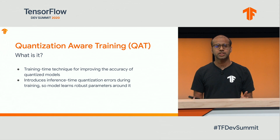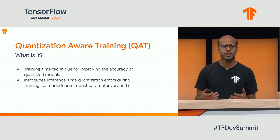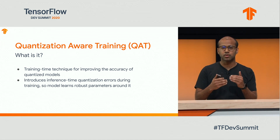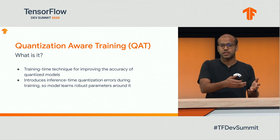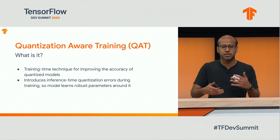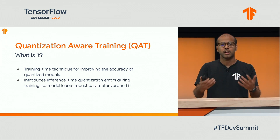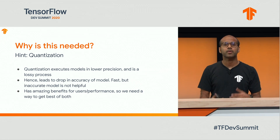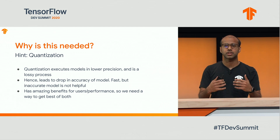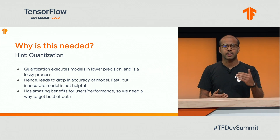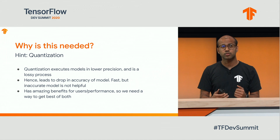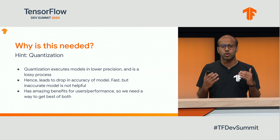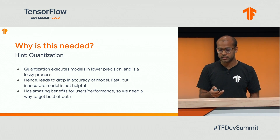Quantization-aware training is a training-time technique for improving the accuracy of quantized models. The way it works is that we introduce some of the errors which actually happen during quantized inference into the training process, and that helps the model learn around these errors and get a more accurate result. We know that quantized models run in lower precision, which is a lossy process that leads to an accuracy drop. While quantized models are super fast, nobody wants an inaccurate model. The goal is to get the best of both worlds.